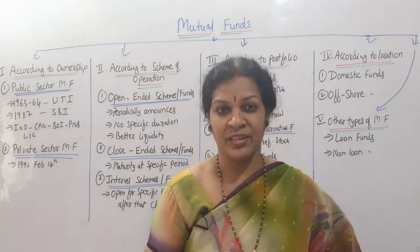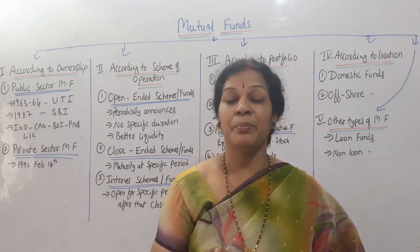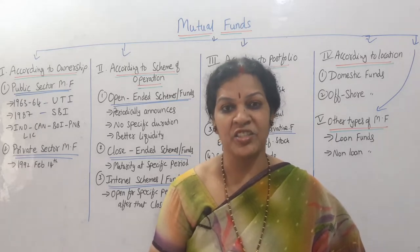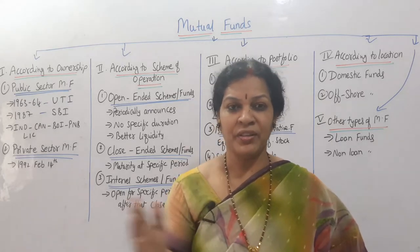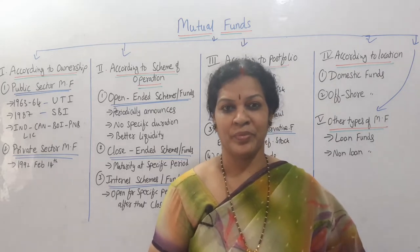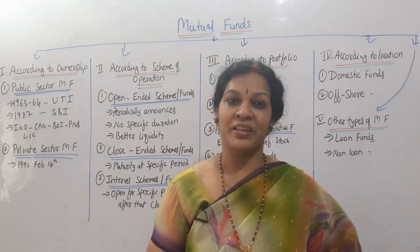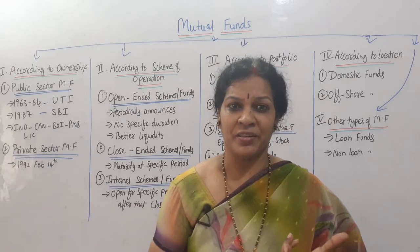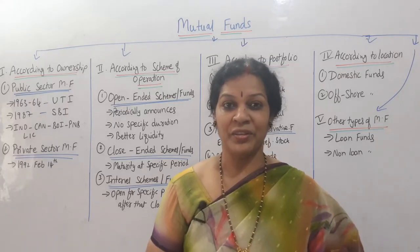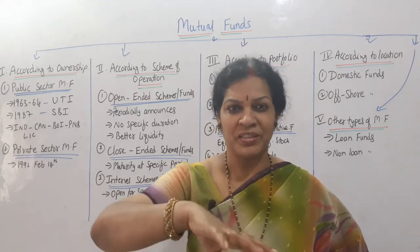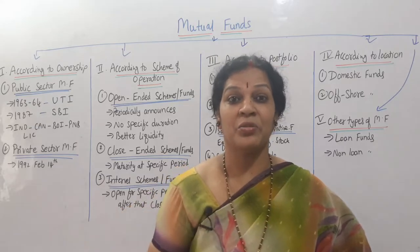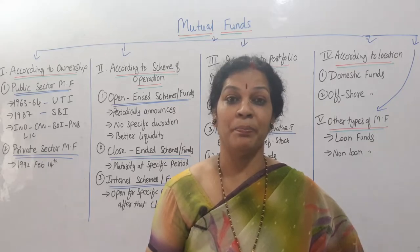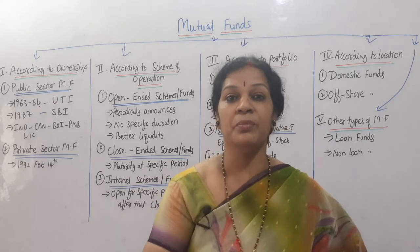In India, mutual funds were first started by the Unit Trust of India — UTI — in the year 1964. After that, SBI entered, then other banking sectors also entered into mutual funds because money requirements were there. Public sectors entered first, and then private sectors also entered into mutual funds to collect money from many people and encourage the common man to invest.